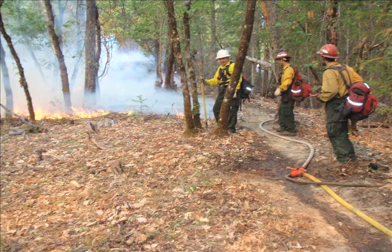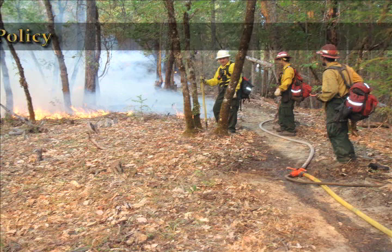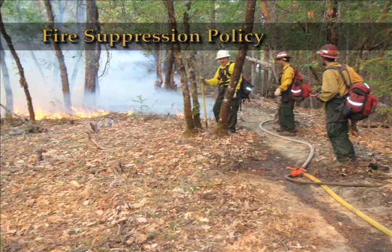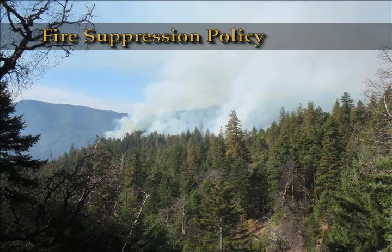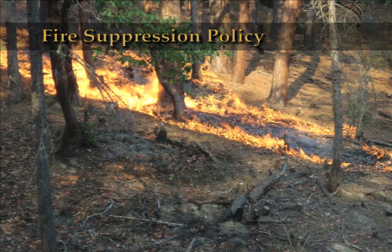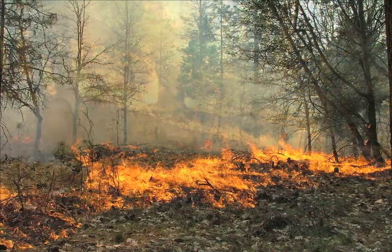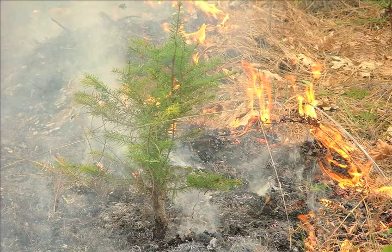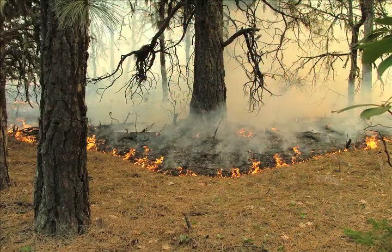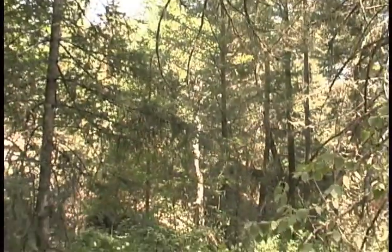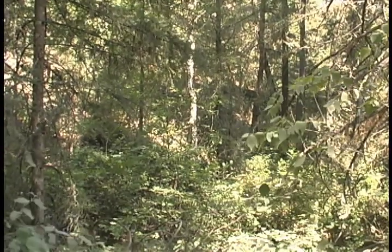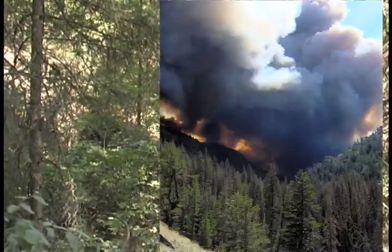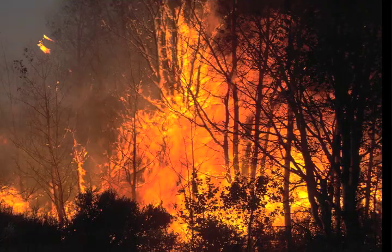Despite the many benefits of fire, for several decades fire suppression was the accepted policy on public lands. Prior to the dominance of fire suppression as a land management strategy, most western ecosystems experienced relatively frequent low-to-moderate severity fires that burned off leaf litter, underbrush, and dead vegetation, preventing these fuels from accumulating. Suppressing these natural fires has allowed fuel to build up, increasing the risk and frequency of high-intensity, high-severity fire.